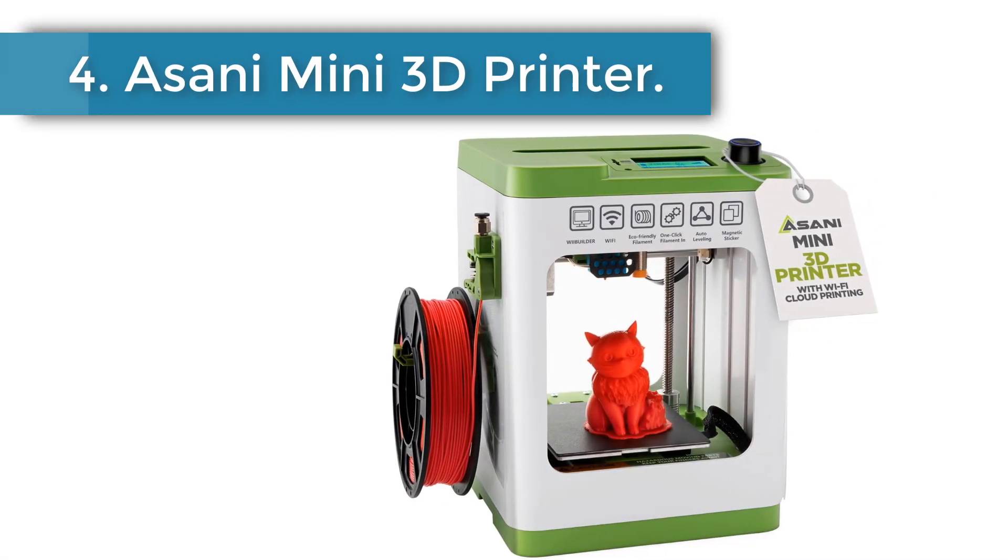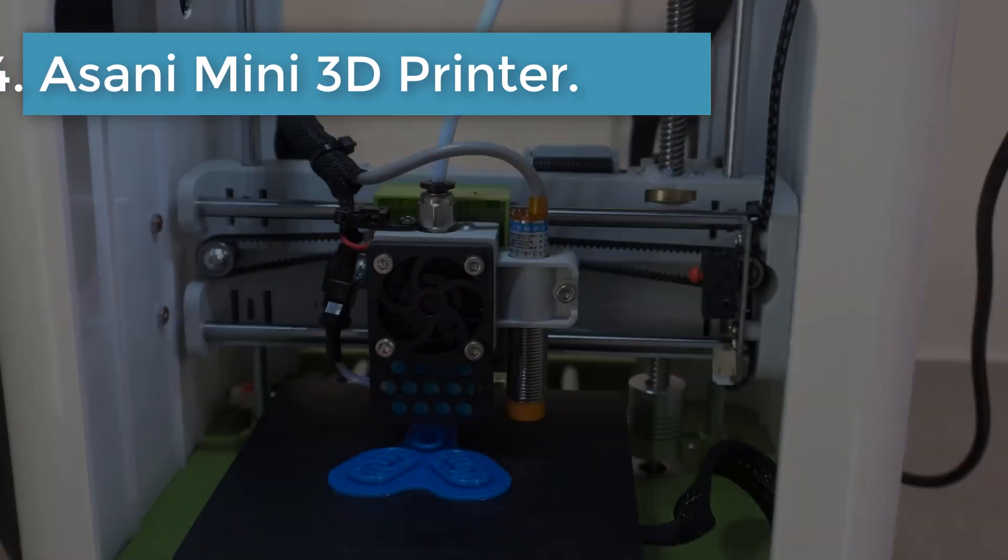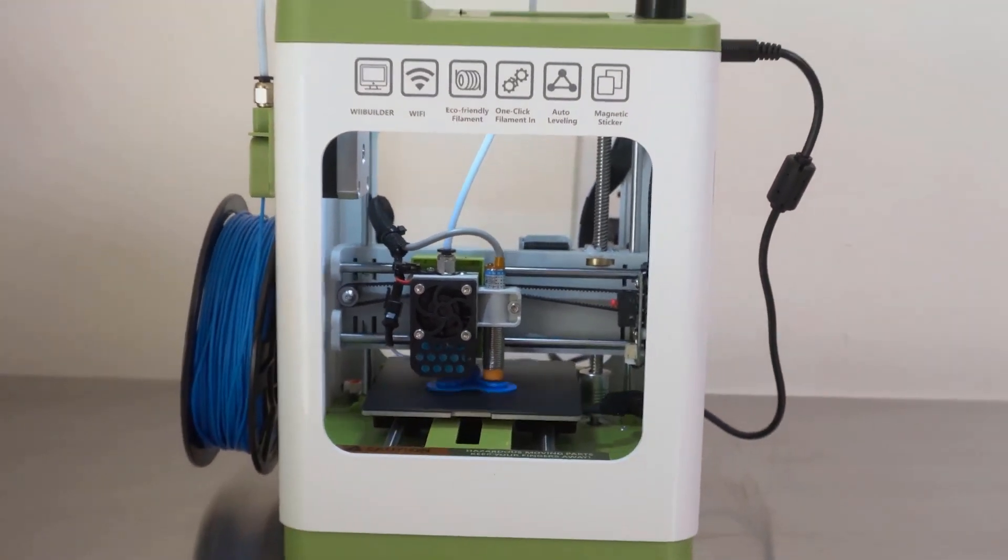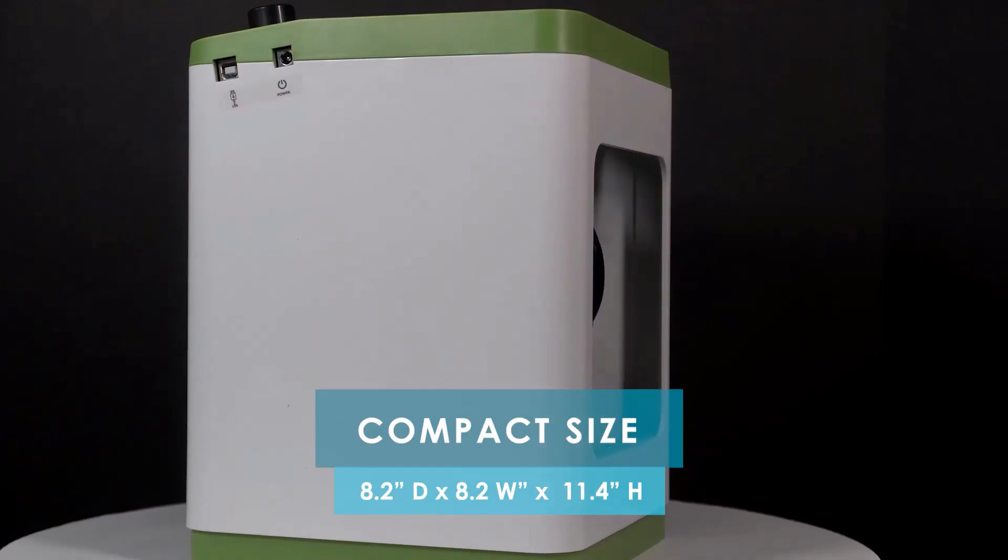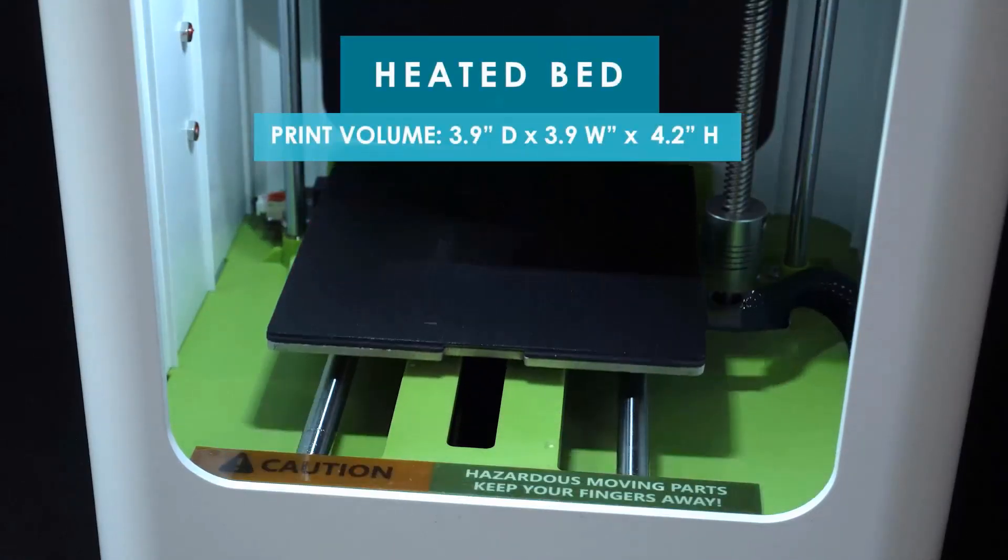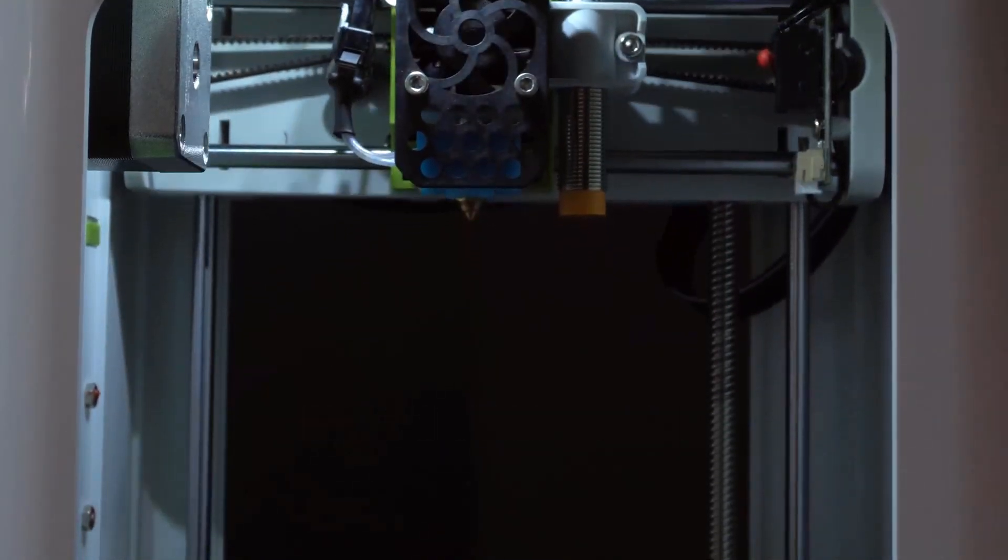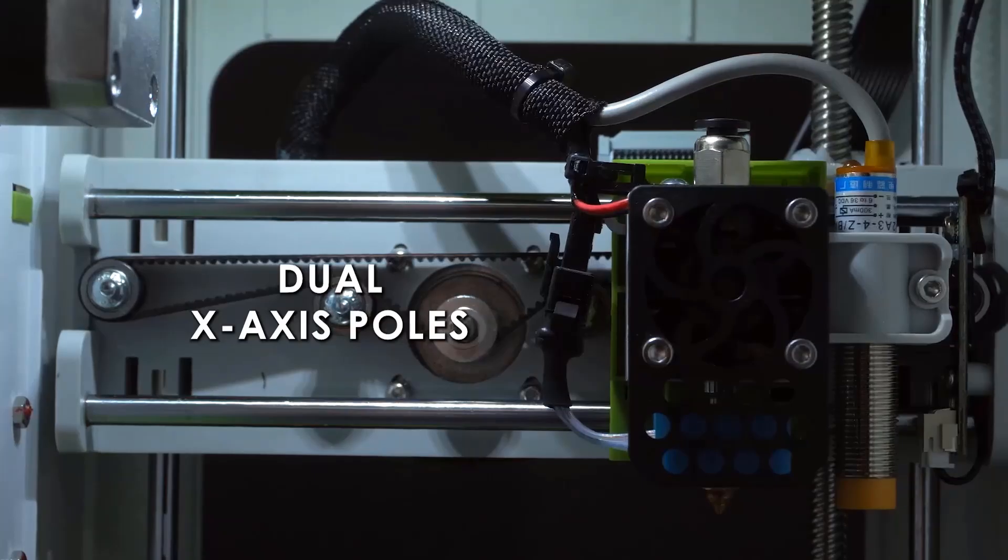Number 4: Asani Mini 3D Printer. The Asani Mini 3D Printer stood out to us as a user-friendly option for newcomers. We found its compact size perfect for tight spaces like dorms or small home offices. The auto-leveling feature worked well, saving us time and frustration during setup.